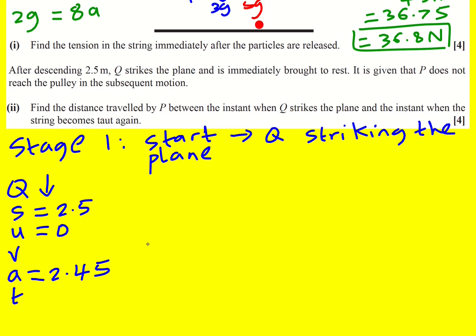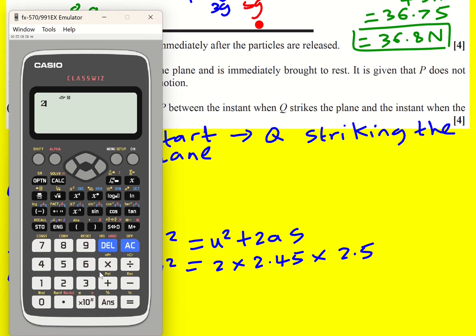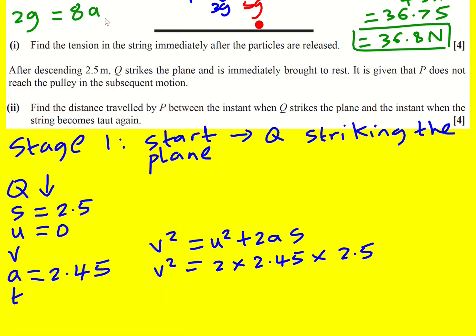So I've got these three things, I can use V squared equals U squared plus 2AS. So it's going to be 2 times 2.45 times 2.5. This gives 49 over 4.